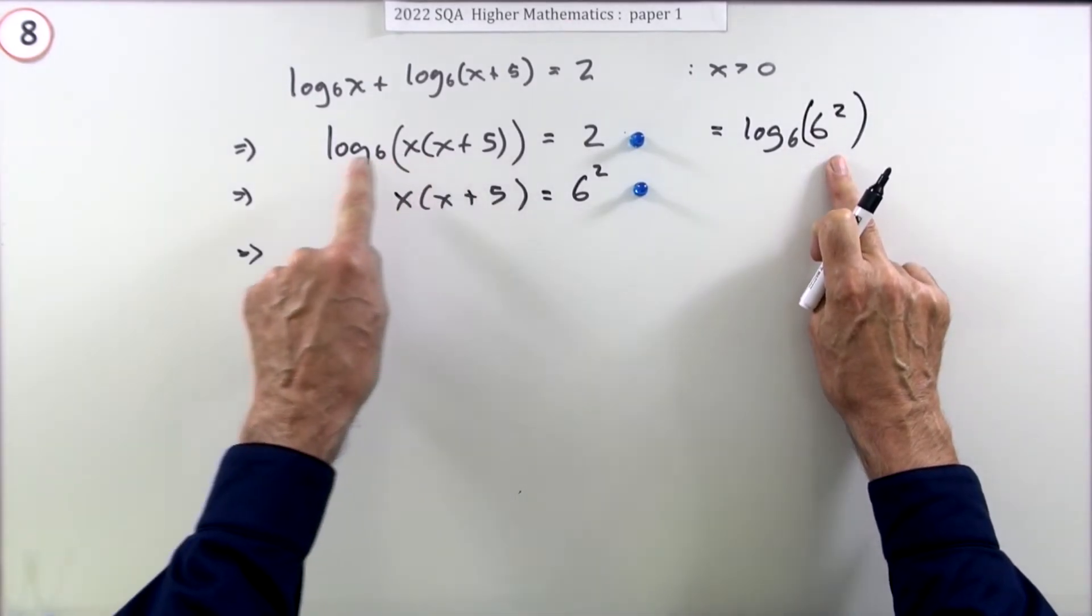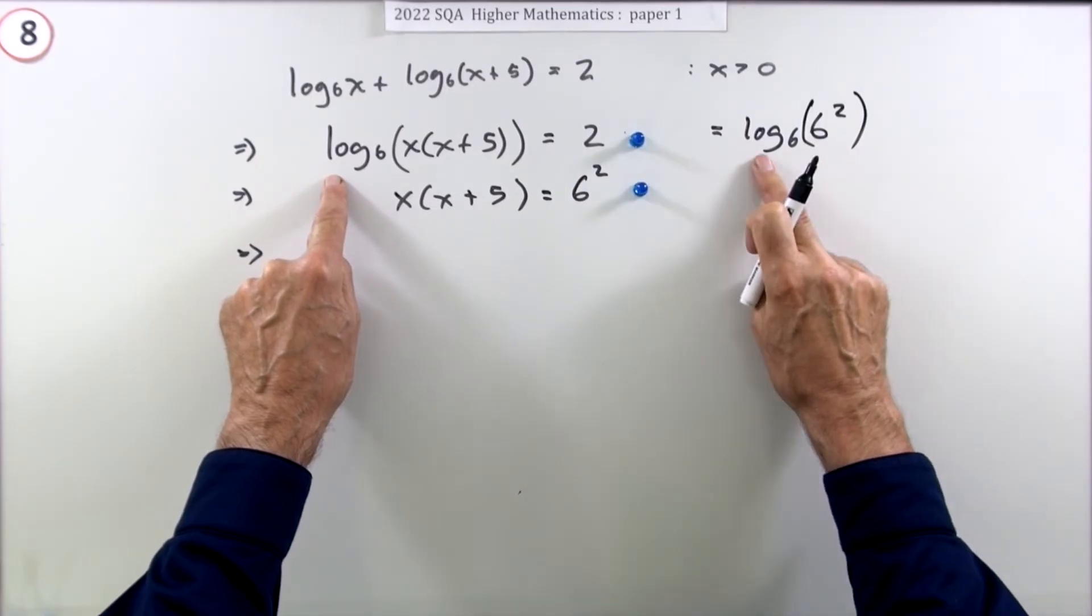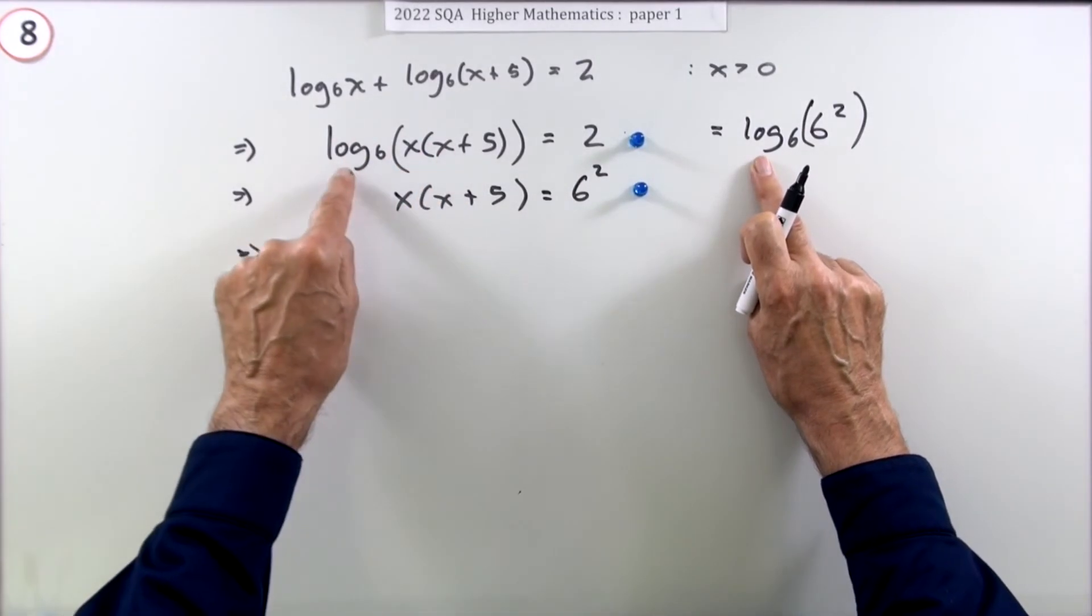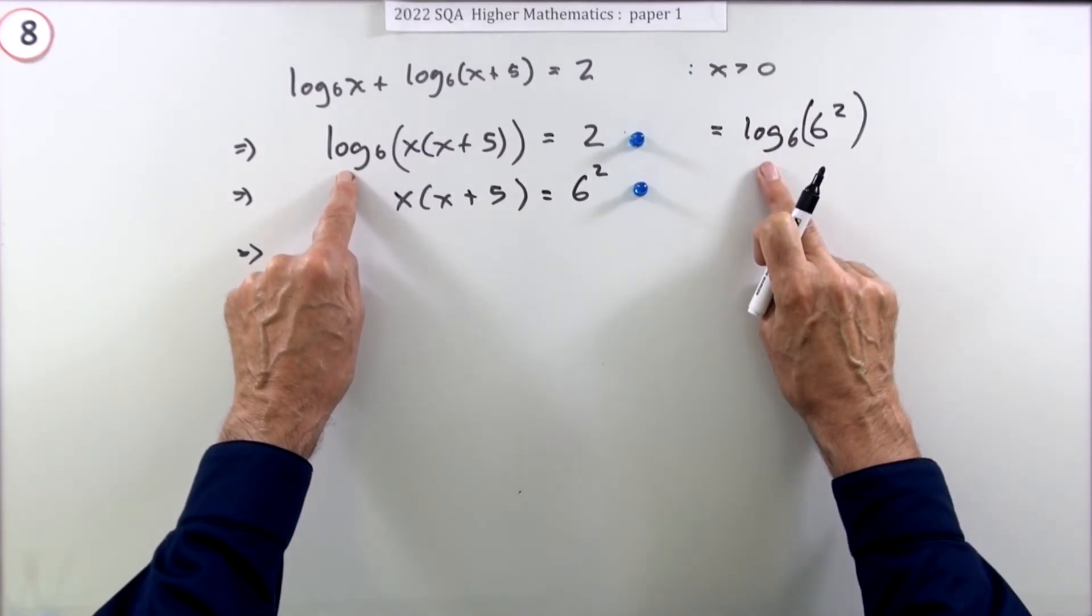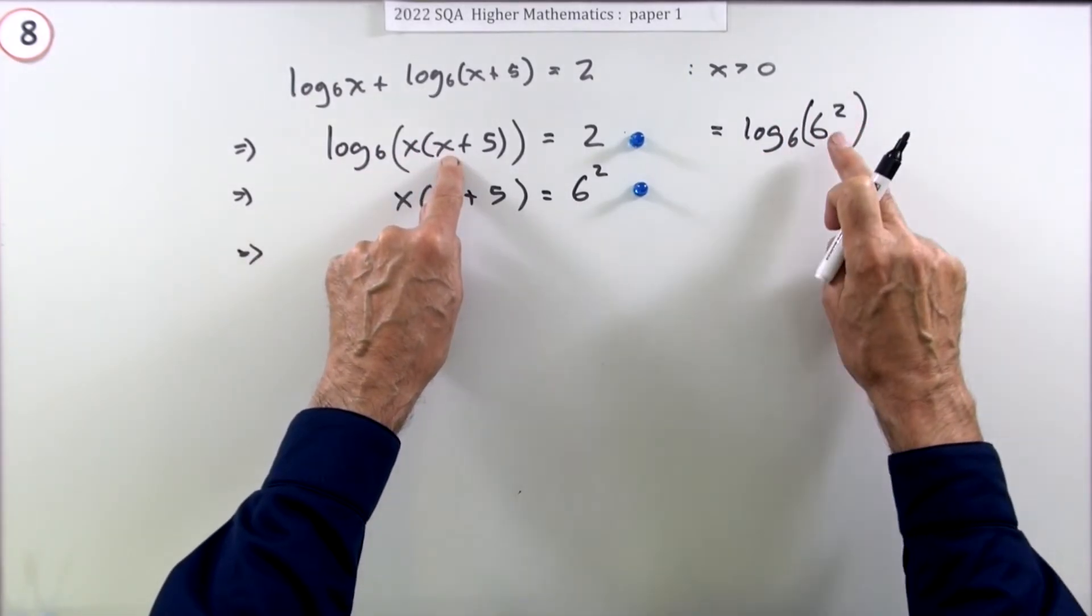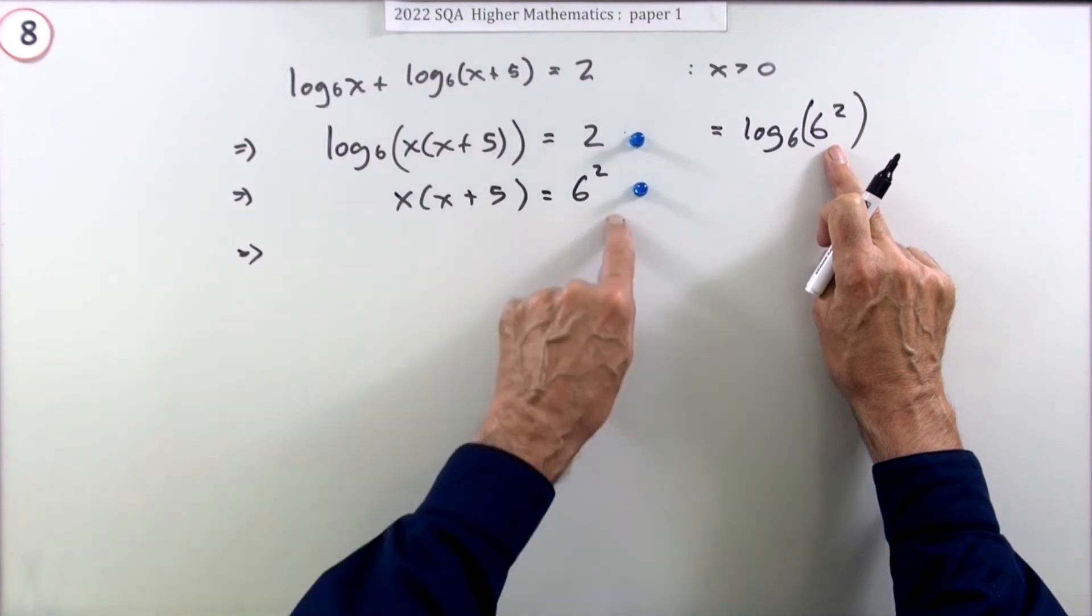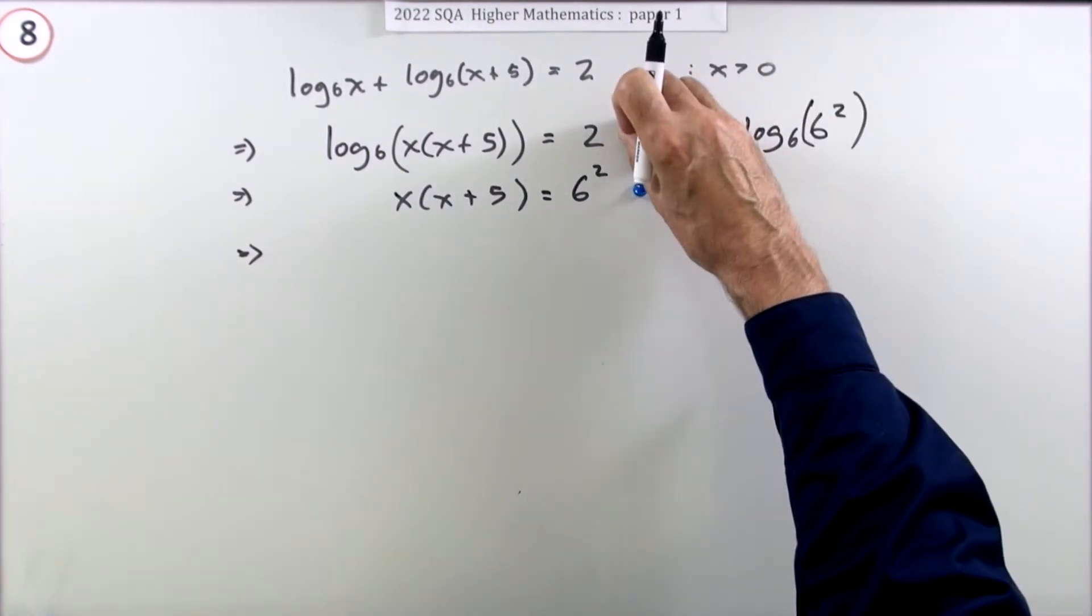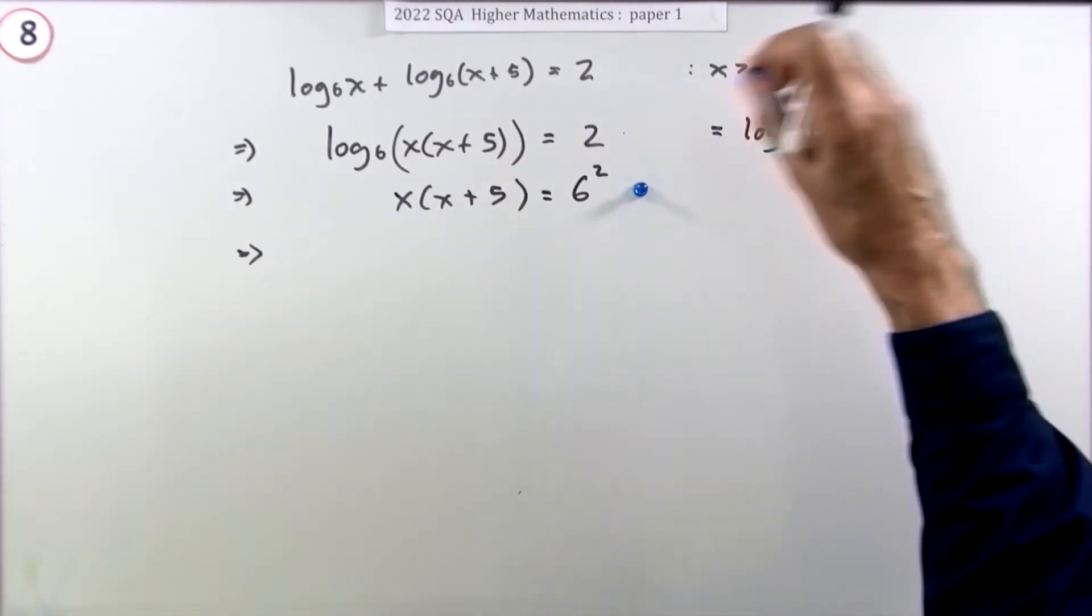And since the logarithm is a function, which means that there's only one answer depending on what you put in, if that logarithm is the same as that logarithm, that means whatever you've put in there is the same as whatever you've put in there, and then you arrive at the same line again. So you can get that by doing either of the things: using the inverse or rewriting that as a log. It's easier just to use the inverse because it just flies away by itself.